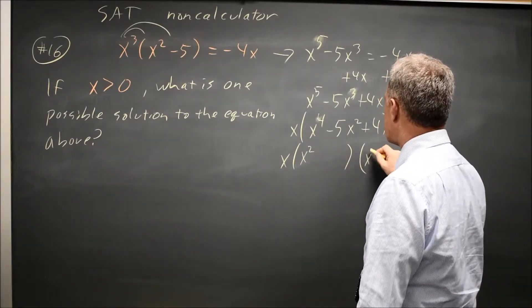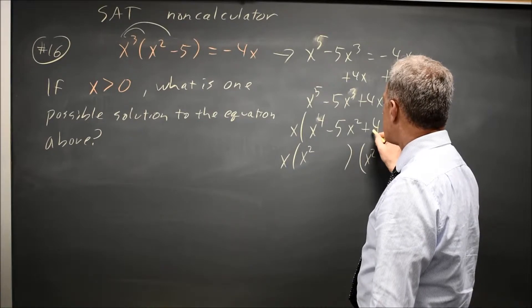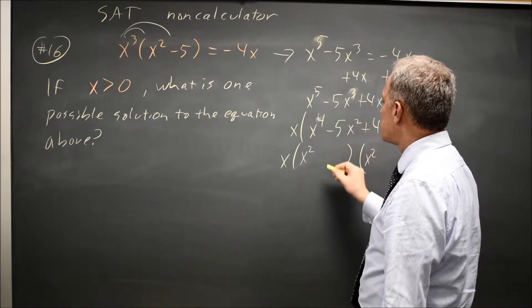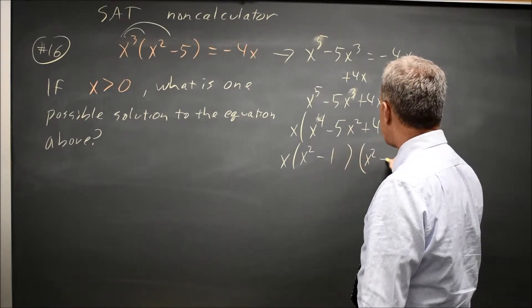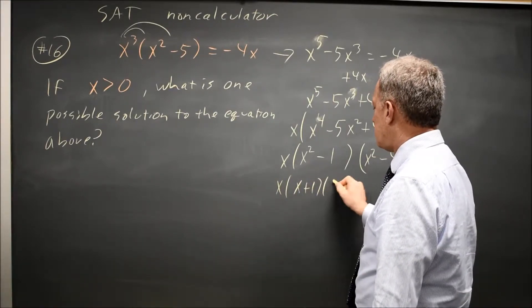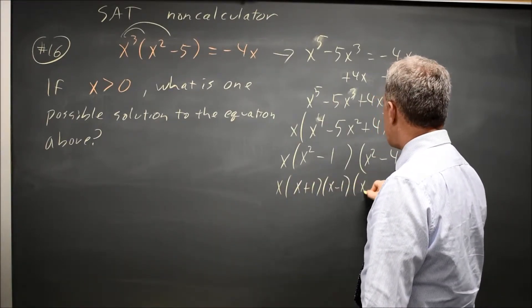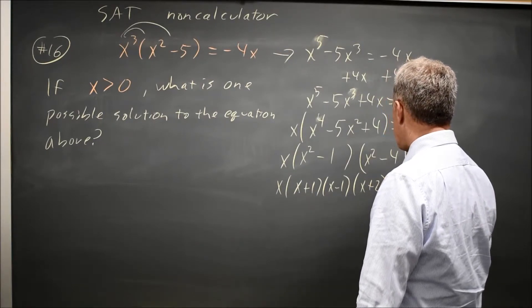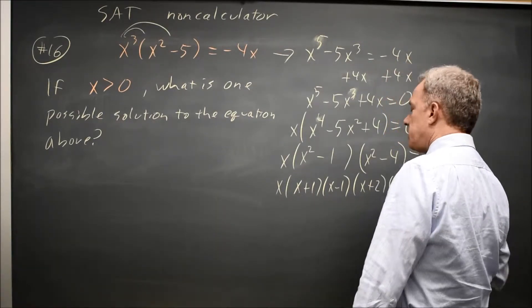So I have x squared times x squared. I need two numbers whose product is positive 4 and their sum is negative 5. That would be negative 1 and negative 4. So x times (x minus 1) times (x plus 1) times (x minus 2) times (x plus 2). That whole product equals zero.